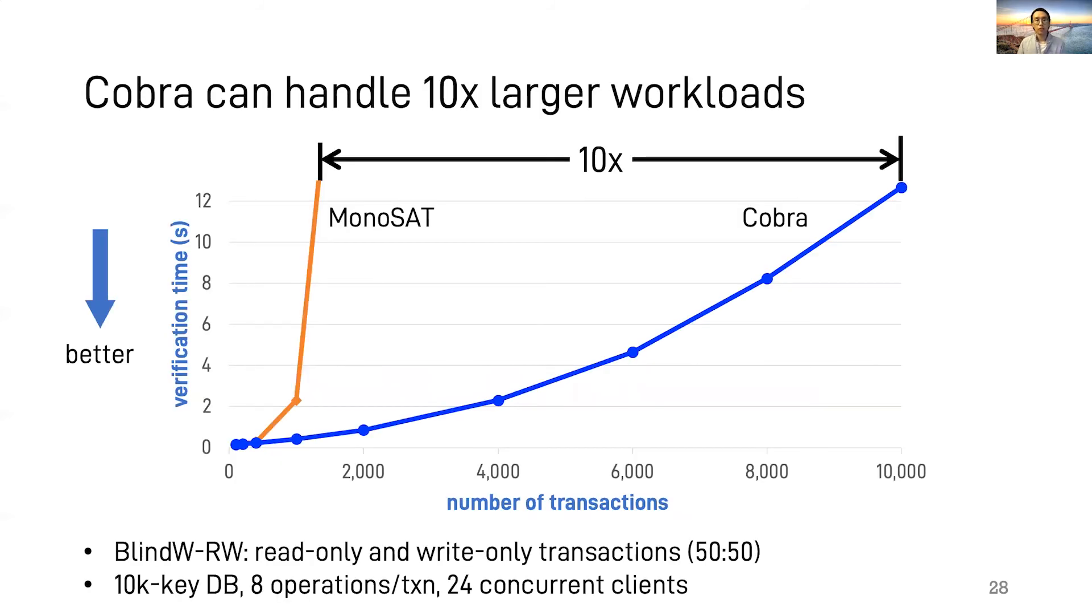Now for the first question, the verifier's cost compared to our baseline. With the combination of multiple techniques, some of which I haven't introduced today, Cobra can handle 10 times larger workloads than our baseline, namely using an SMT solver MonoSAT in the first place. This figure shows the difference on one benchmark, BlindWrite ReadWrite. Other benchmarks have similar results.